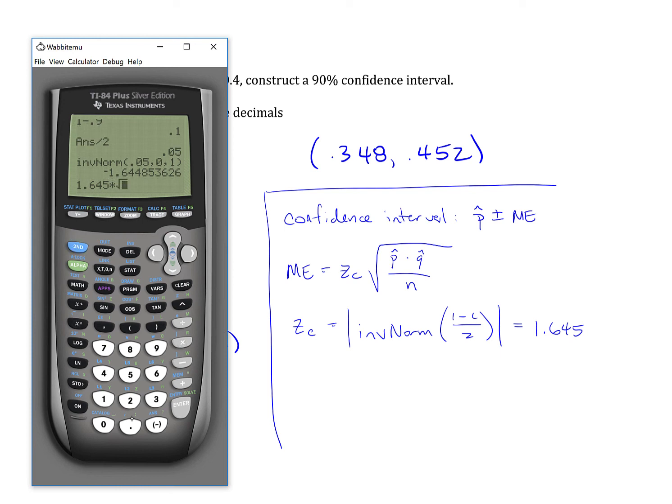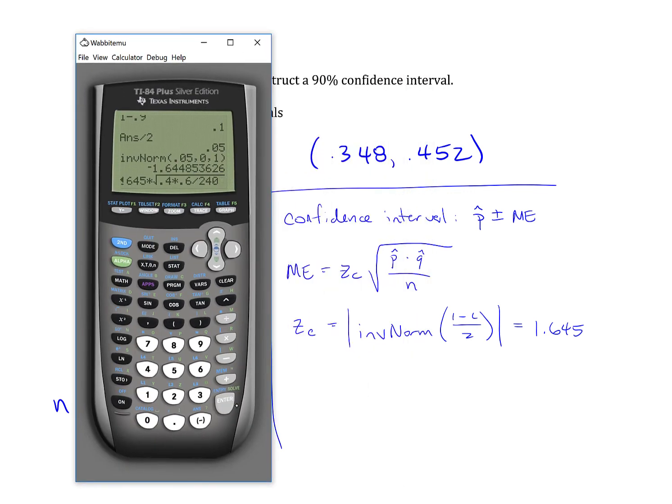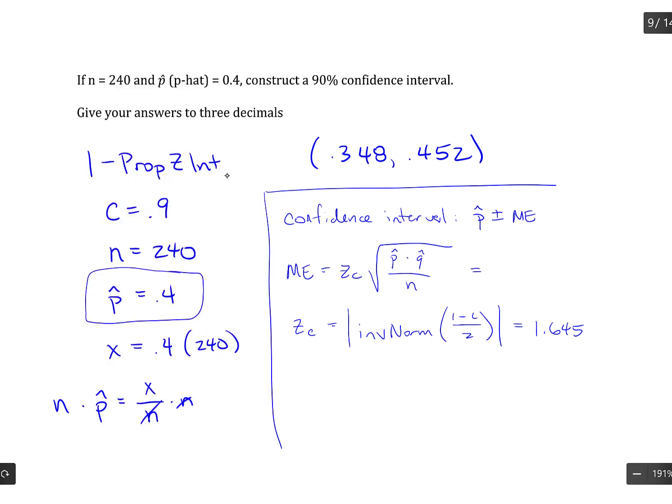Times the square root of p-hat, which is 0.4, times q-hat, which is 1 minus p. And p being 0.4, q would be 0.6. And then divided by our sample size, and our sample size was 240. So that comes out to 0.052.